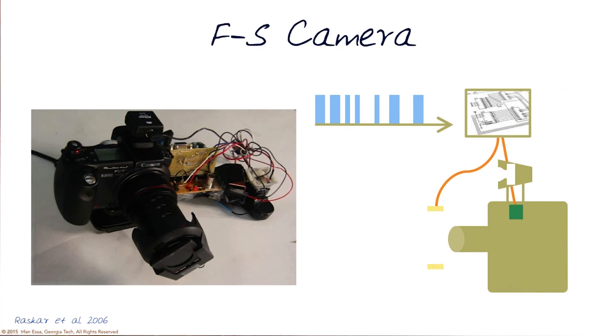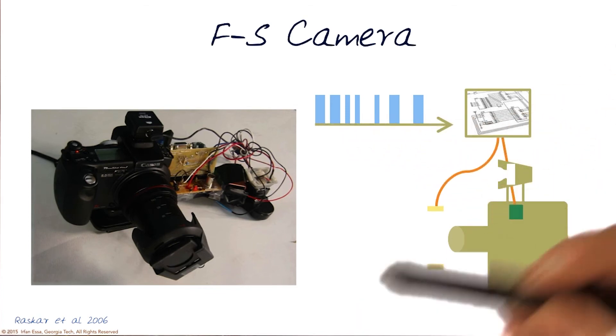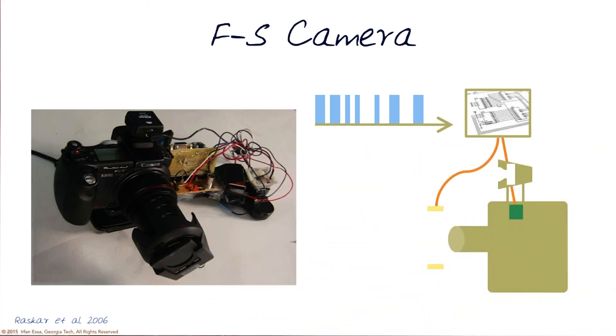Raskar et al. designed this camera by taking an existing camera and adding a controller that changes how the shutter opens and closes with a digital process. They could figure out the exact code on how the shutter would open. They created this new camera and did many experiments with it. I recommend you look at the paper for more details.